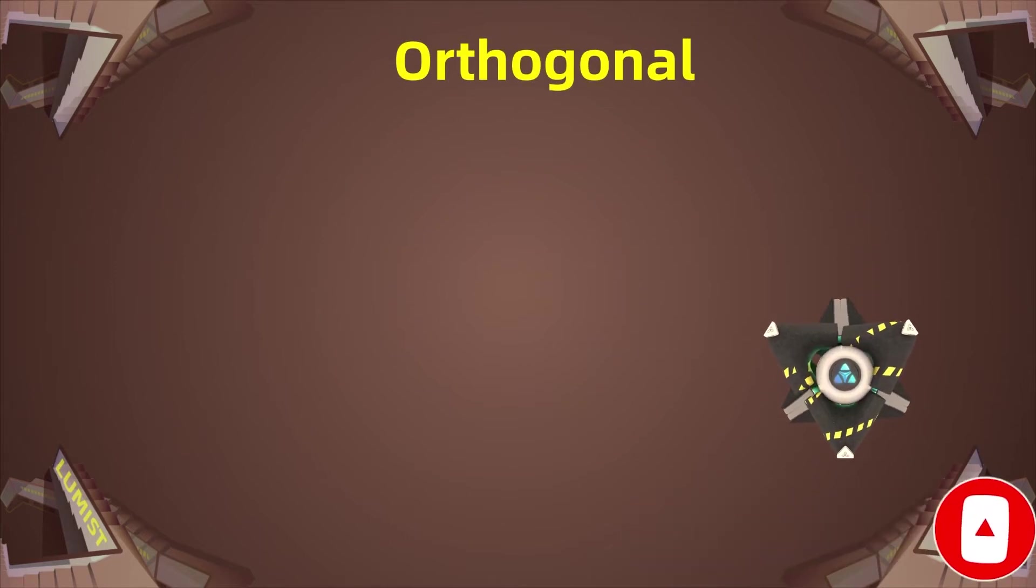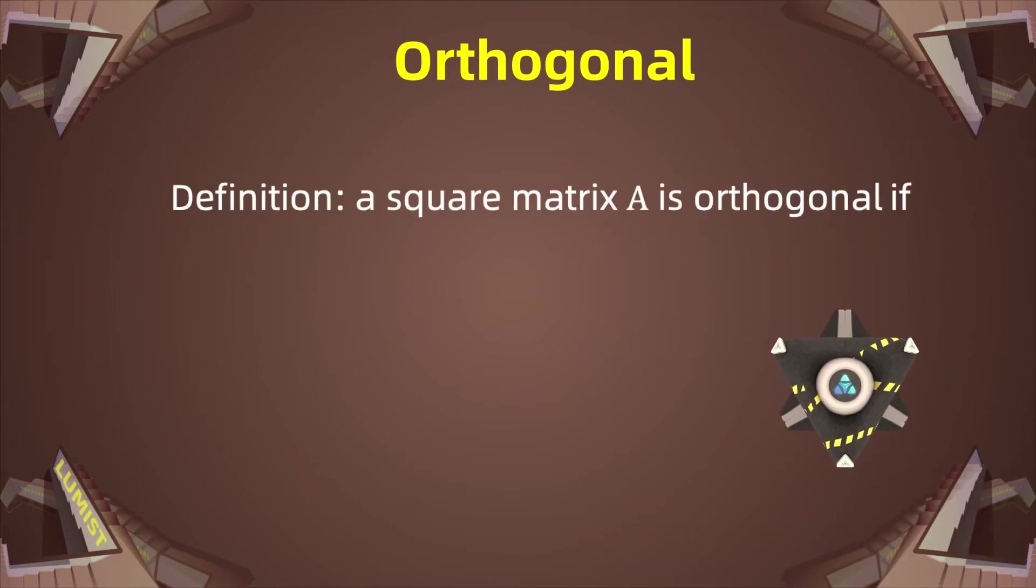And here we have the definition. A square matrix A is orthogonal if the inverse of A is equal to the transpose of A.